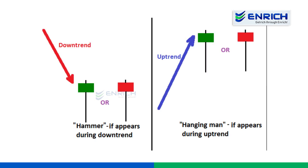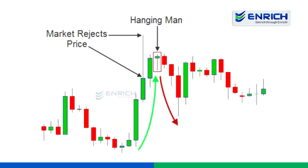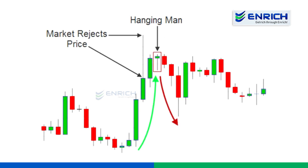For some it may be confusing as both the hammer and the hanging man look the same. So how can you spot a hanging man? A hanging man is spotted after an uptrend, and a gap up from the close of the previous candle to the open of the hanging man candle should be seen. How do you confirm the trade? When the price trades below the low of the hanging man candle, that's your confirmation. Some traders may move as soon as they see the price trading below the candle's shadow, while some others may wait for another candle below the low — it depends on how you trade and what works best for you.